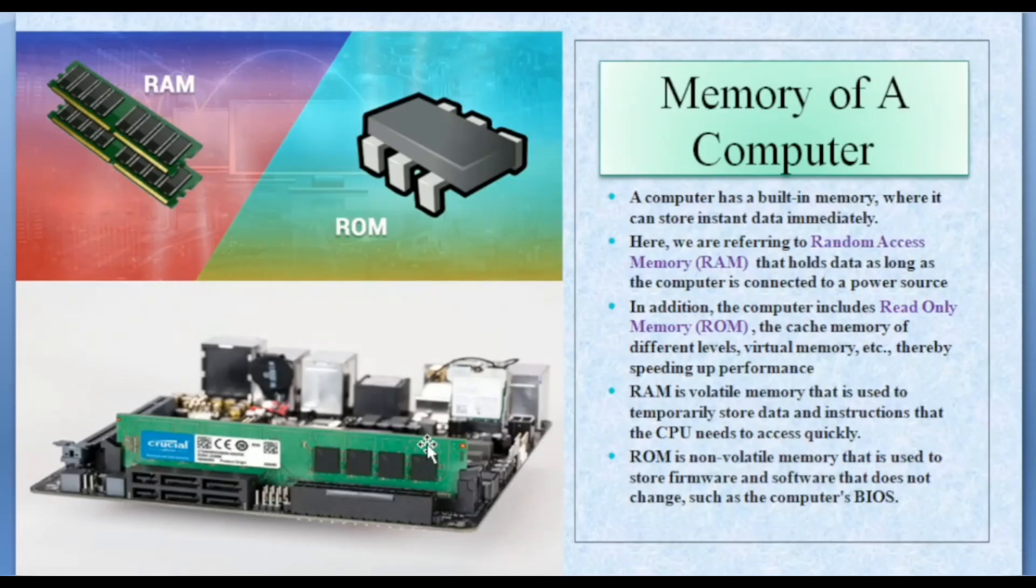Next is memory of computers. Computers have inbuilt memory that can store data instantaneously. This includes random access memory. You can see here RAM is placed on the motherboard and it holds data as long as the computer is connected to the power source. This means RAM is a volatile memory. And also computers include read-only memory, cache memory of different levels, virtual memory, etc., which all speed up the performance of computer.